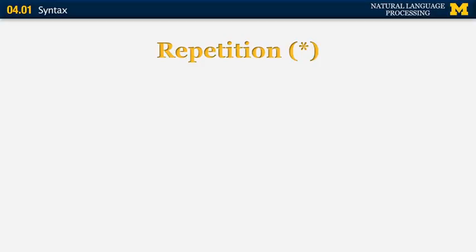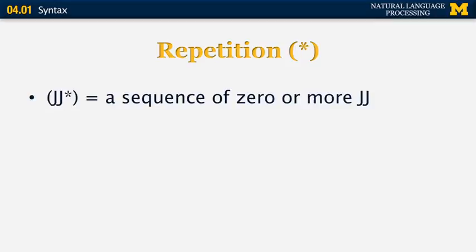Another symbol used in context-free grammars is the Kleene star, used to denote a sequence of constituents. For example, JJ* means a sequence of zero or more adjectives — it can be any number. Noun phrases can have multiple adjectives or other pre-modifiers that precede the noun. For example, the thin blue line — thin precedes blue and blue precedes line. The general structure is a determiner followed by some number of adjectives followed by the noun.